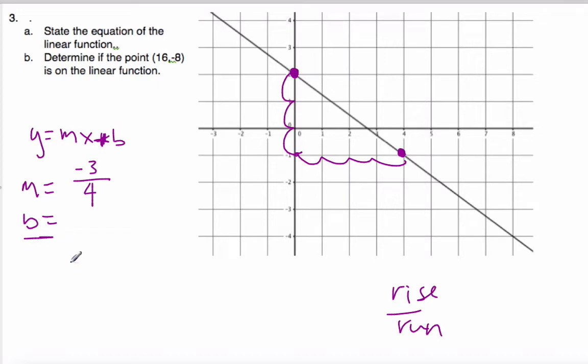The b value is simply the y-intercept where it crosses the y-axis, which is right there at 2. b is 2. Now I can just plug it into the equation. y is equal to negative 3 quarters x plus 2. And that is it. Done. As easy as that. No other calculations to do.